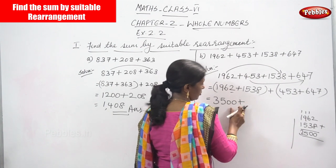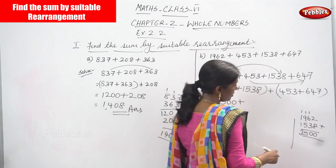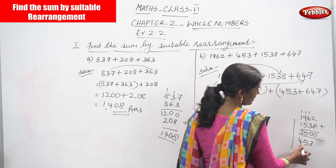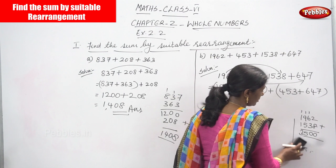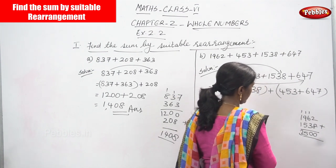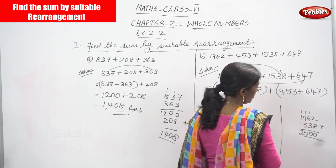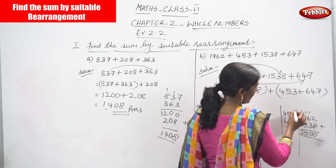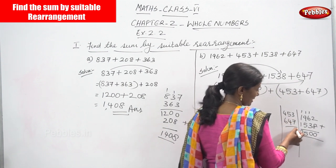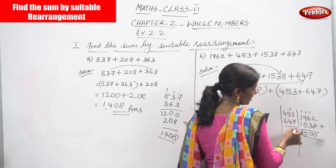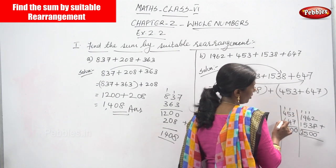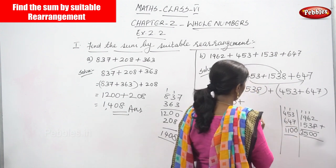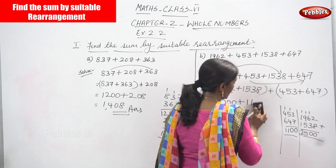Now solving 453 plus 647: 3 plus 7 is 10, write 0 and carry over. 5 plus 1 is 6, 6 plus 4 is 10, write 0 and carry over. 4 plus 1 is 5, 5 plus 6 is 11. The answer is 1100.